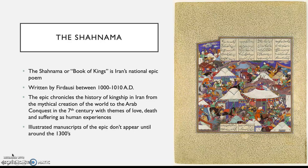The epic was first written by Abu al-Qasim Firdausi around 1000 to 1110 AD. What's especially interesting is that of the several hundred known illustrated manuscripts of the epic, all of these post-date the creation of the text by around 300 years. The text was made around the 1000s and the first known illustrated copy appears around the 1300s.